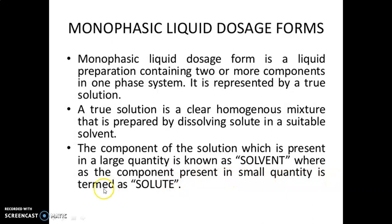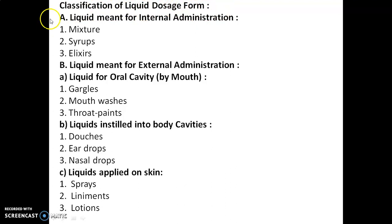The classification of liquid dosage forms is divided into two main classes: liquids meant for internal administration and liquids meant for external administration. In case of internal administration, it is of three types: mixtures, syrups, and elixirs. For external administration, it is divided into three types: liquids for oral cavity, liquids instilled into body cavities, and liquids applied on the skin.